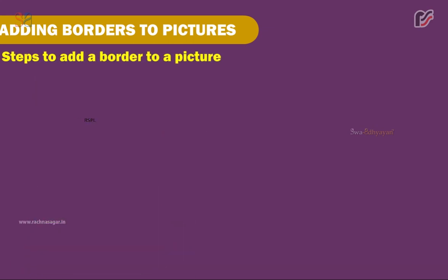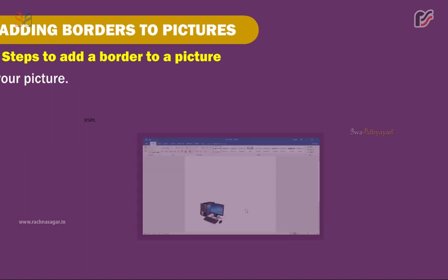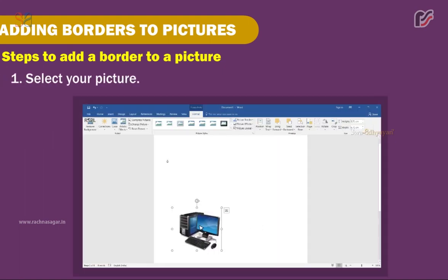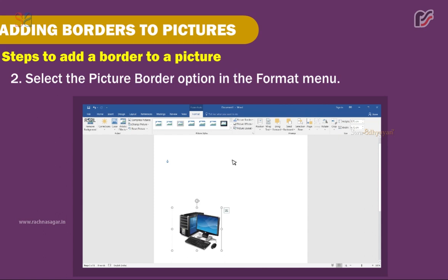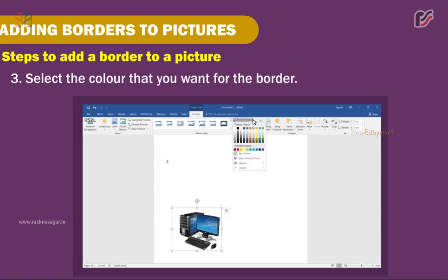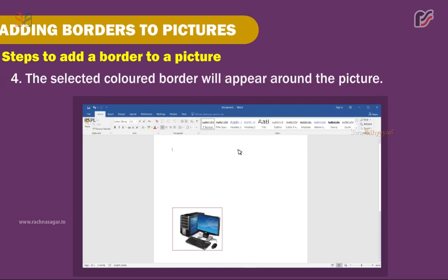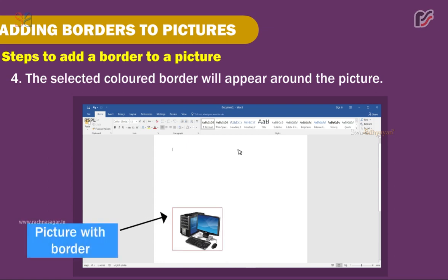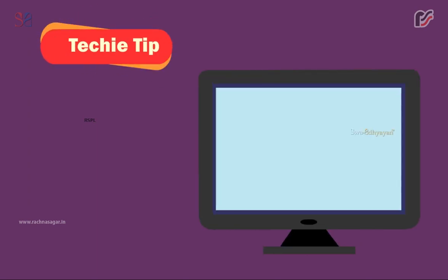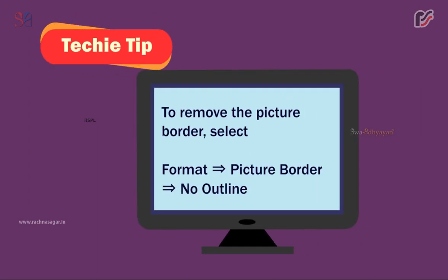Steps to add a border to a picture: 1. Select your picture. 2. Select the Picture Border option in the Format menu. 3. Select the color you want for the border. 4. The selected colored border will appear around the picture. Techie Tip: To remove the picture border, select Format → Picture Border → No Outline.